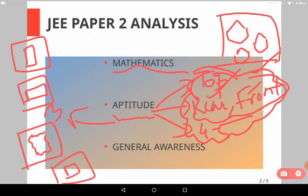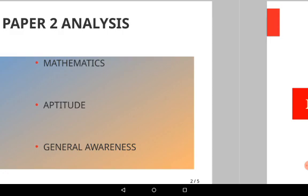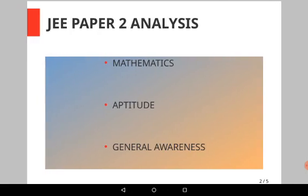For example, one option had a different line — not a straight line — so we could simply take that as the odd one out. It was easy. About general awareness, one question gave the name of a garden and asked which architectural style was used in its construction.